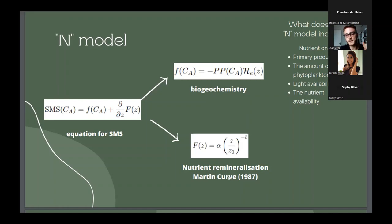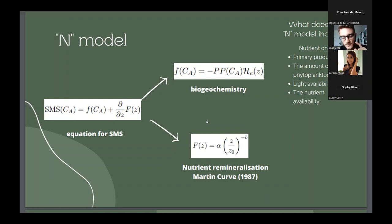representing the nutrient remineralization proposed by Martin in 1987. So, the source minus sinks in this simplest model consists of these two equations, source minus sinks is split in these two terms. And then, we can write the advection-diffusion equation in this way.